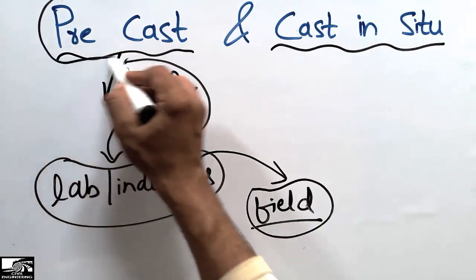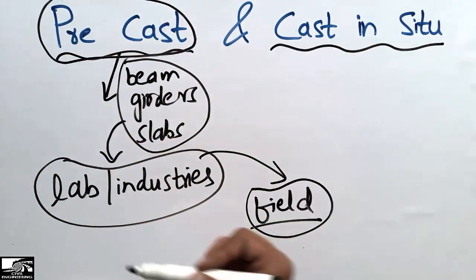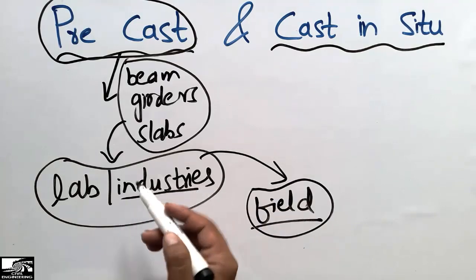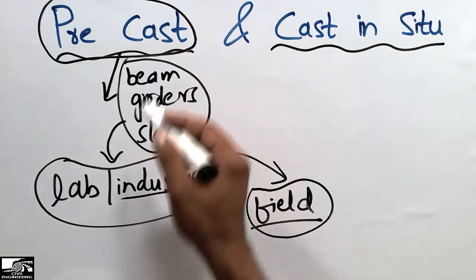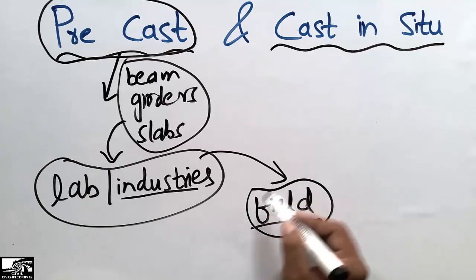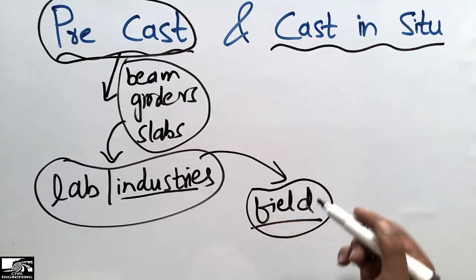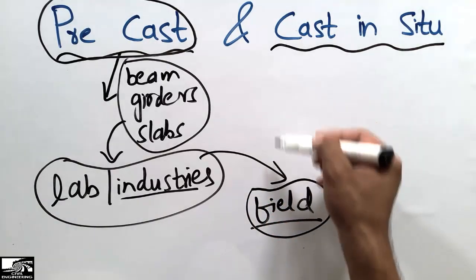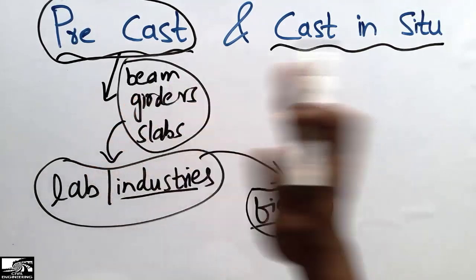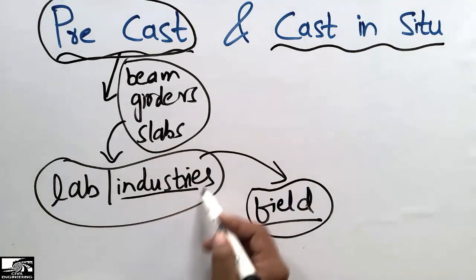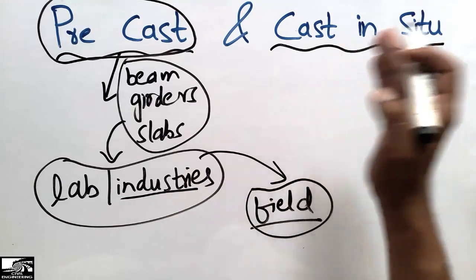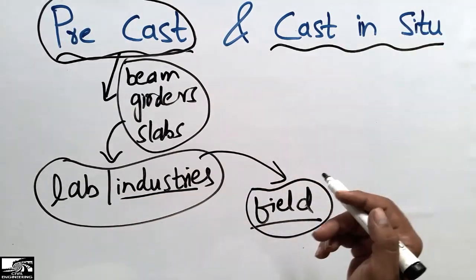A common example is in bridges, where girders are prepared in the industry and then placed directly in the field. They are brought to the site by trucks or other large vehicles. So there is no need to cast the concrete on the field — they are simply transported and installed.